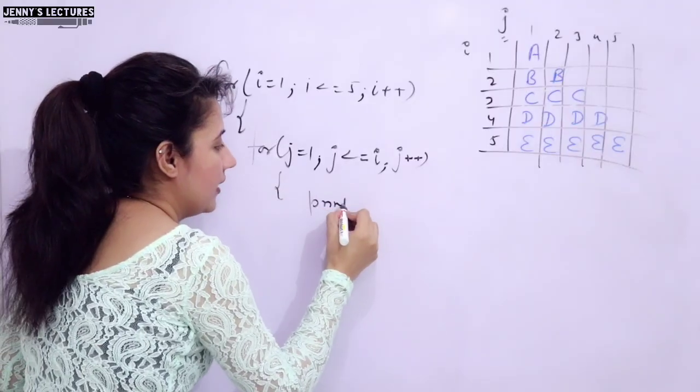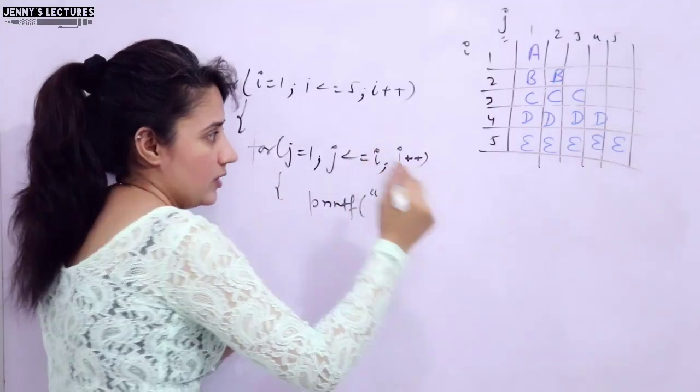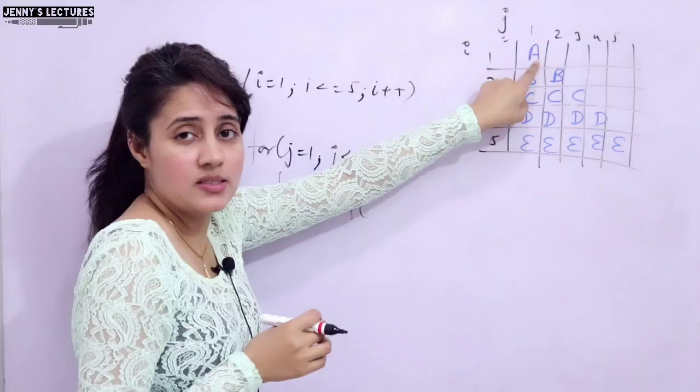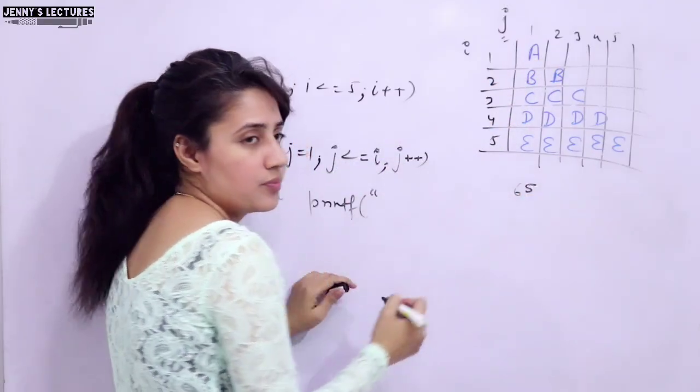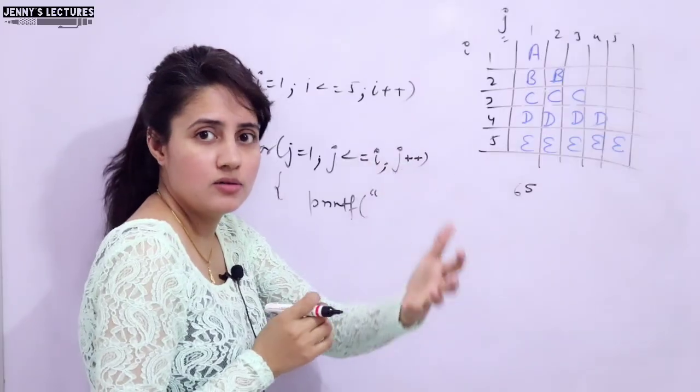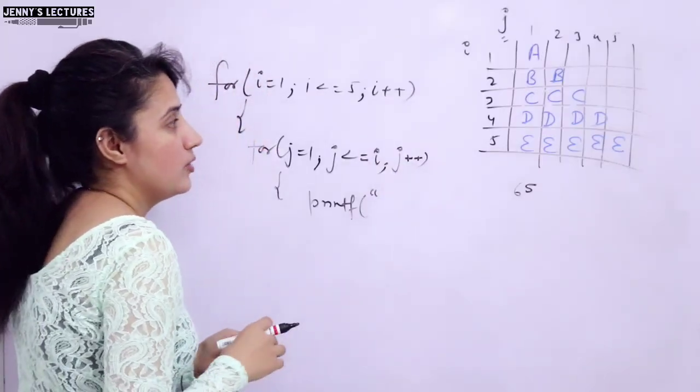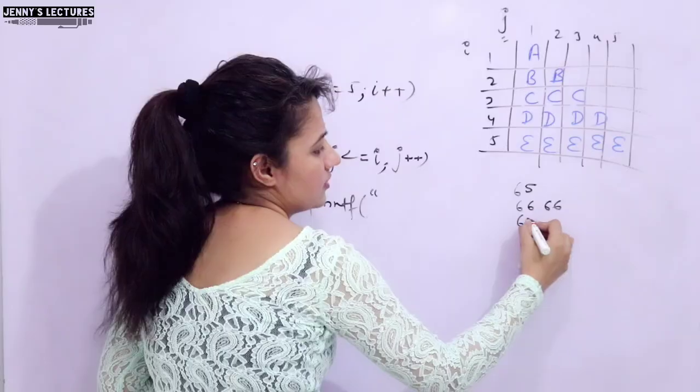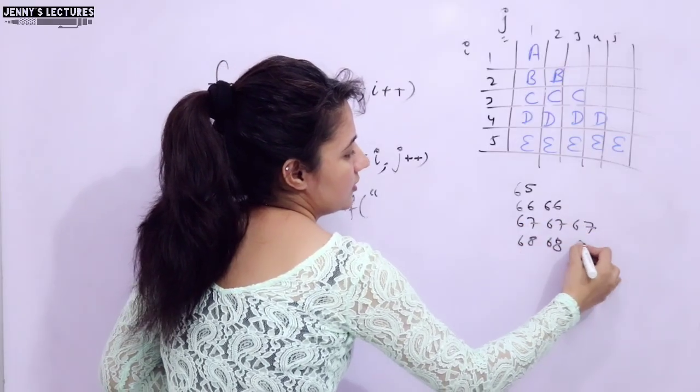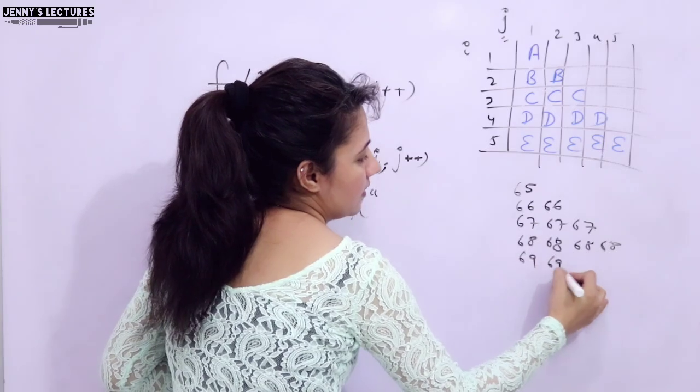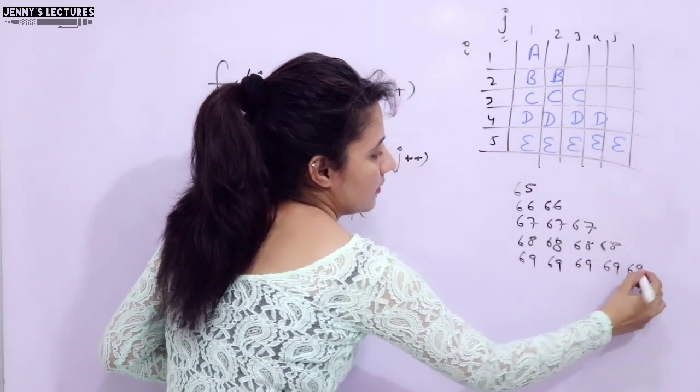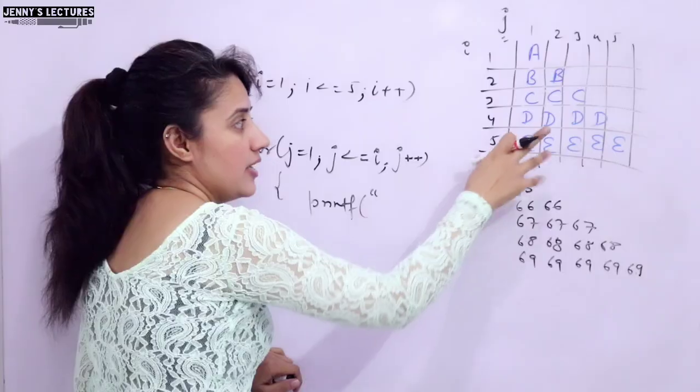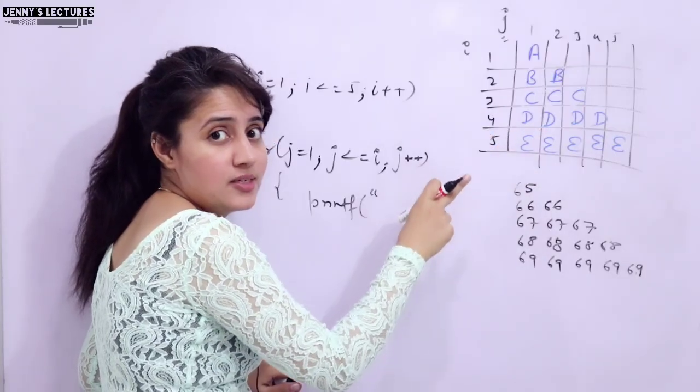In inner loop, what we will print? If I write this in computer memory, how this A value would be stored? Using ASCII character system. A is equivalent to 65, and that would be converted into binary. Only zeros and ones, computer can understand. If I write it something like this: 65, 66, 66, 67, then 68, and then 69. This is A, B, C, D, E. Like this, 70, 71. These are ASCII values of these capital ABCDs. Small ABCDs are having different ASCII values.